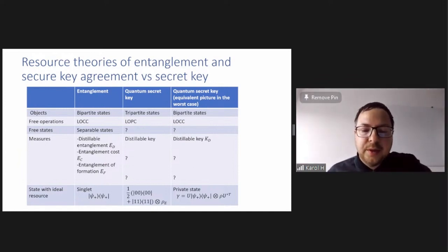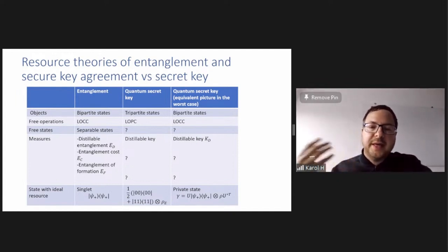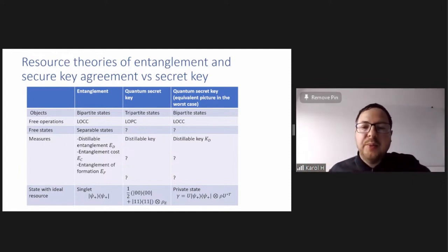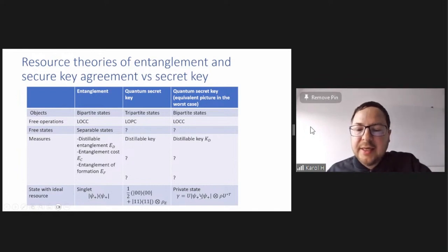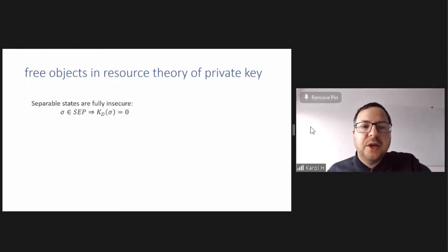And on the other hand, on the last column, I showed that if you go to the worst case, namely, you allow in this tripartite state eavesdropper to hold the whole purification of a state that is shared by Alice and Bob. Then you can focus just on this bipartite state that is shared, because Eve is already defined by this state. And then you can just transform its equivalent to transform it by LOCC operations. Then there is a measure, which is known, which is distillable key, and the question marks still are there. While the state with ideal resource, they generalize the notion of singlet. These are called private states, and they are kind of twisted singlets. So you take a singlet state here, and you tensor it with state rho, and rotate it by special unit transformation.